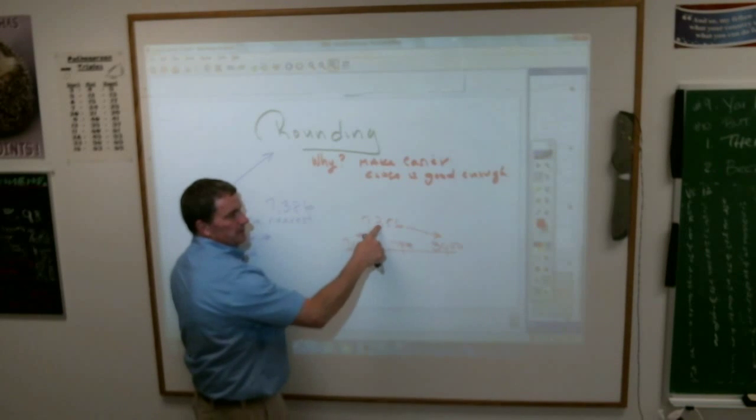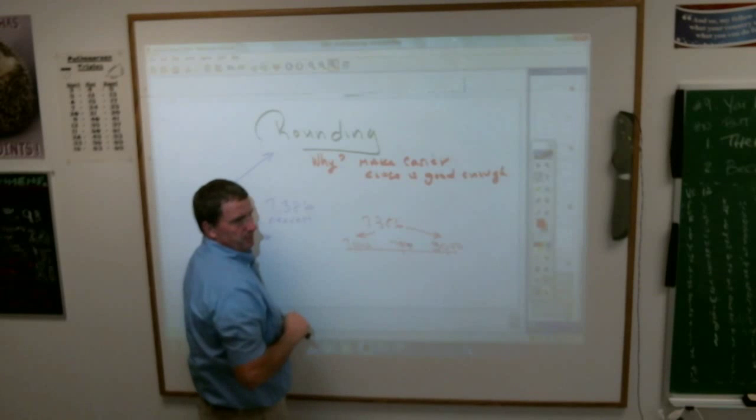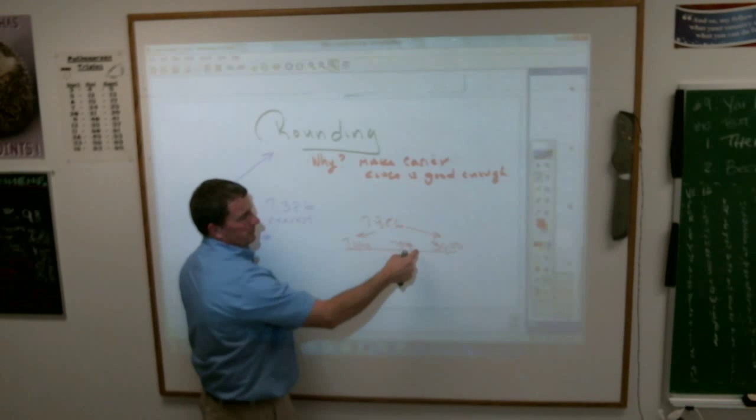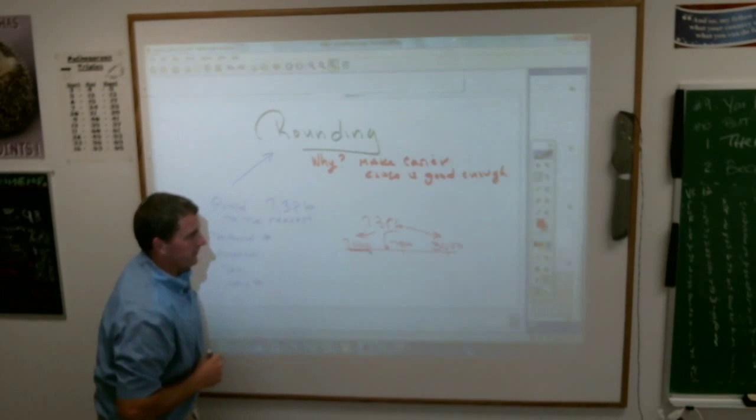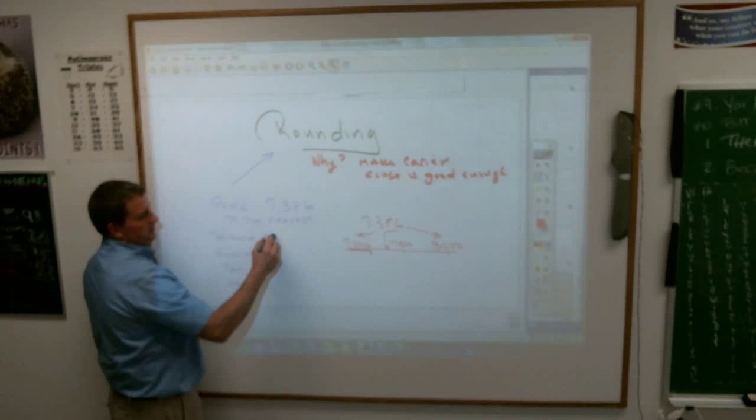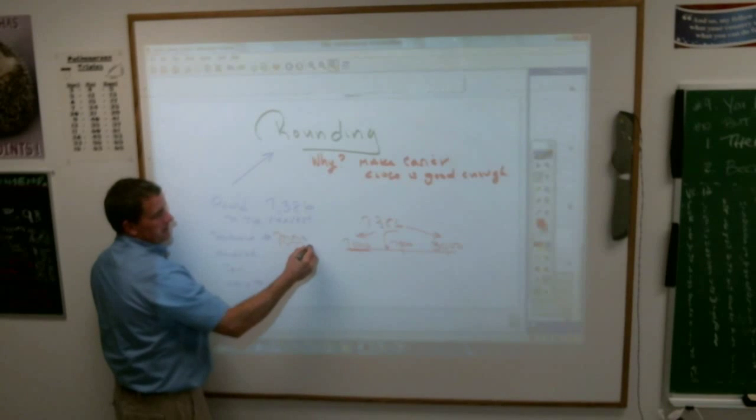7,386, where does it fall on that number line? It's going to be up here or down here, down here on the lower side. So you know that it is nearer, or closest to 7,000. So rounded to the nearest thousand, it's going to be 7,000.